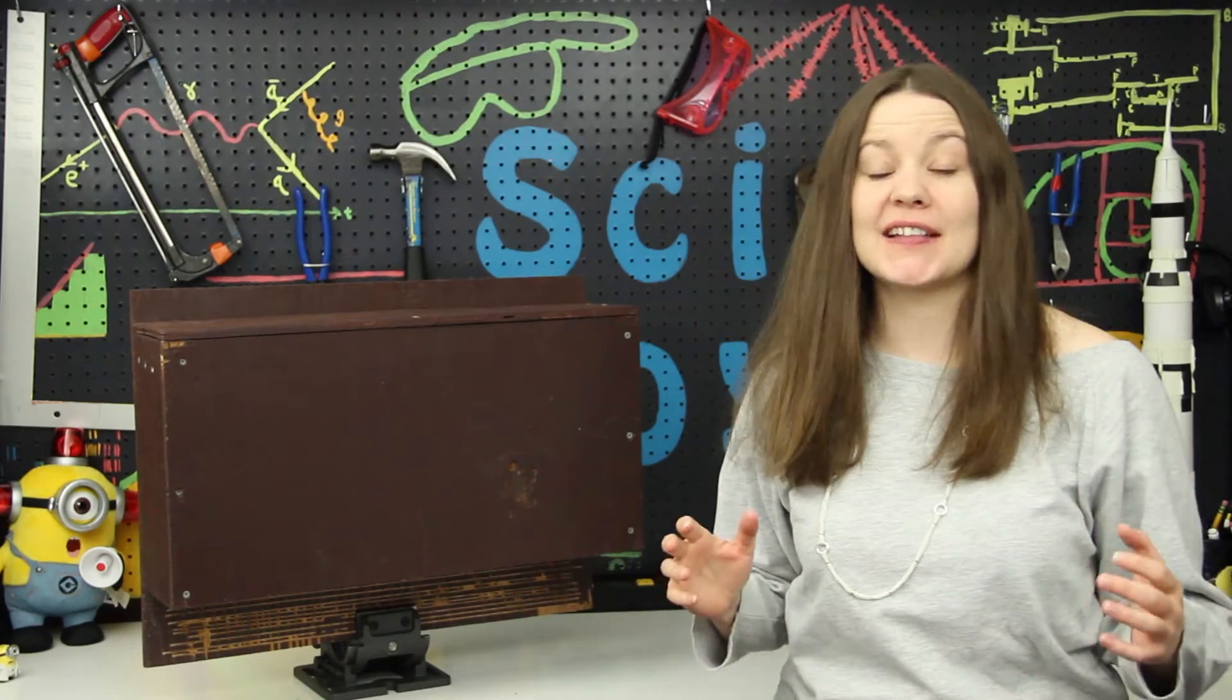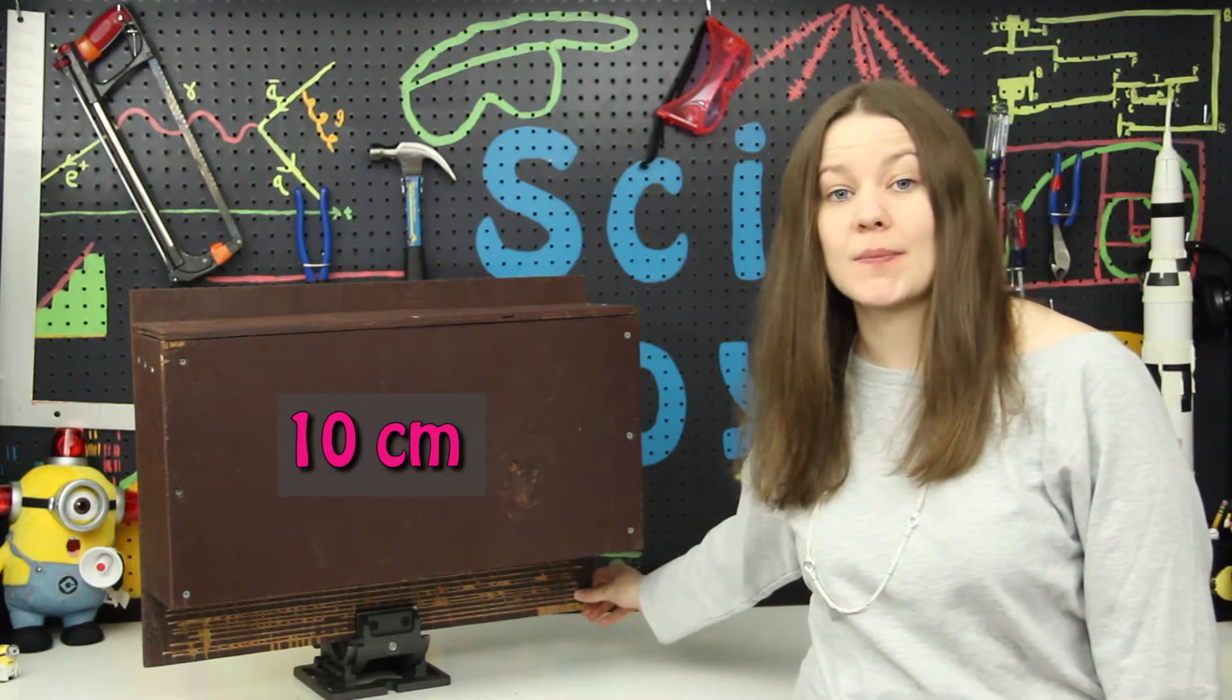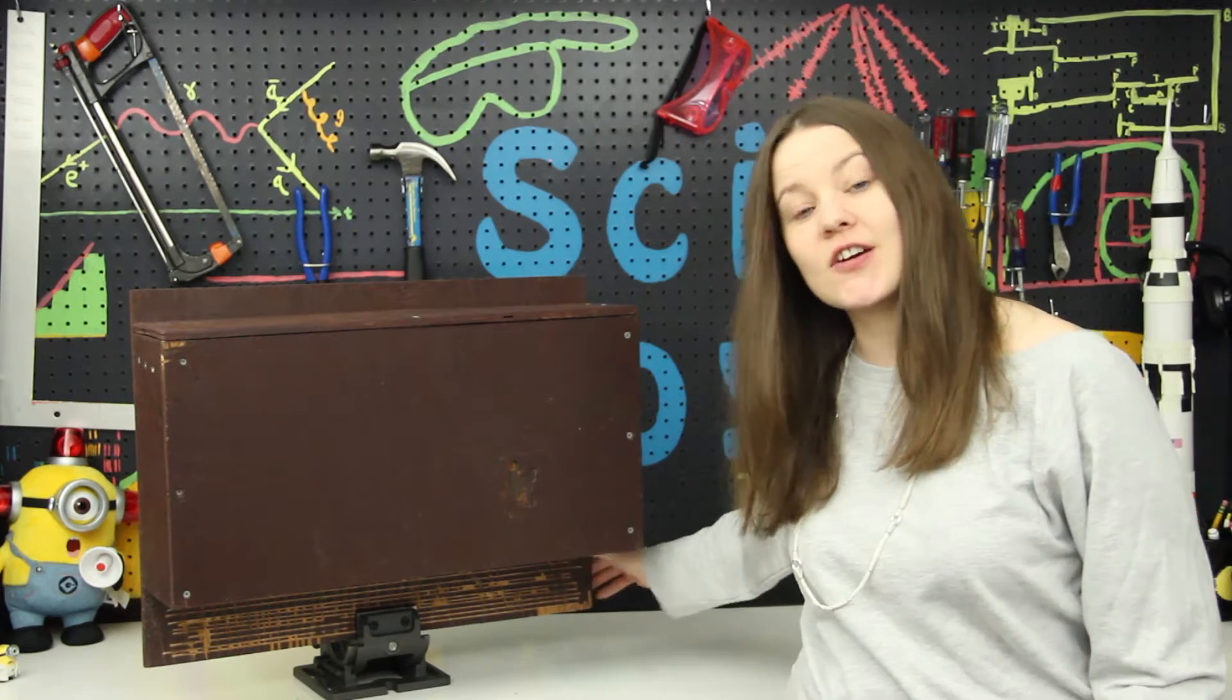Your bat box is going to have a landing pad for the bats. It's going to extend at least 4 inches below the bottom so the bats can land on here and climb up inside.